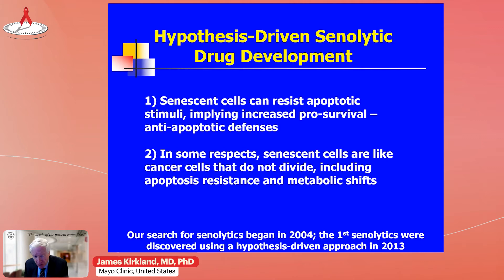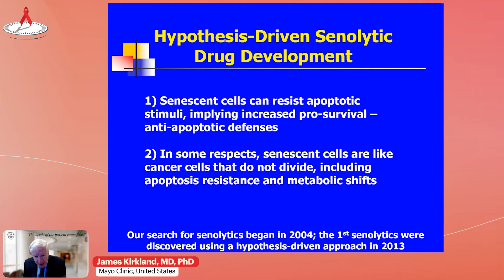There was an important paper that came out by Ned Sharpless — who just stepped down as director of the National Cancer Institute — back in 2004 in the Journal of Clinical Investigation, where he showed that senescent cell burden increased with age in mice, and that caloric restriction, which improves health span — the period during life with independence, freedom from disease and disability — not only increased health span but in concert with that, delayed senescent cell accumulation. So that led us to ask back in 2004: is the relationship between senescent cell burden and decreases in health span an association, or is it causal?